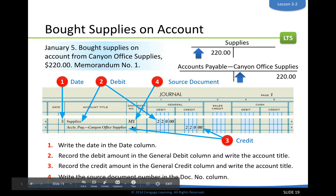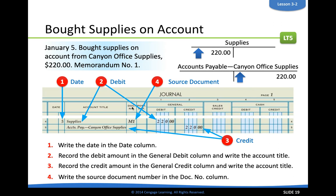The source document is memorandum number one, so we write M1 under the document number — only on the first line, not the second, because this is all one entry across two lines. You'll only have a one-line entry when dealing with a sale or a cash account that uses the special column.